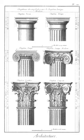Niche: in classical architecture, an exedra or an apse that has been reduced in size, retaining the half dome heading usual for an apse.